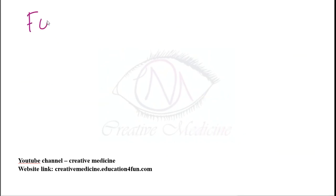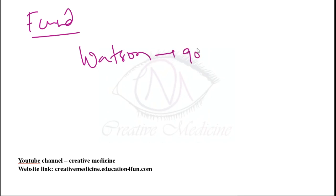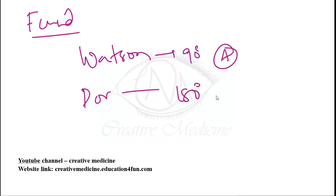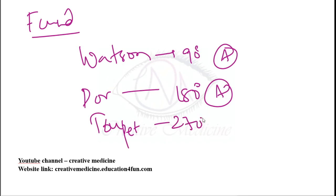Types of fundoplication: Watson's fundoplication is 90 degrees anteriorly. Dor's fundoplication is 180 degrees anteriorly. Toupet fundoplication wraps the fundus of the stomach 270 degrees posteriorly around the esophagus.